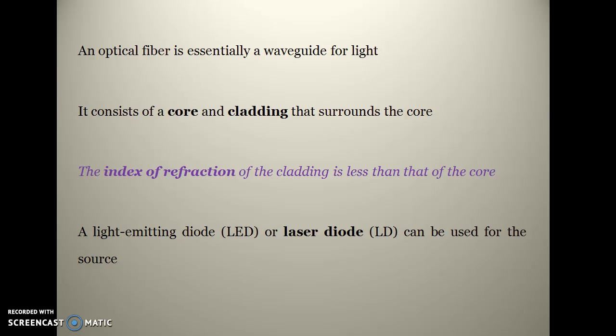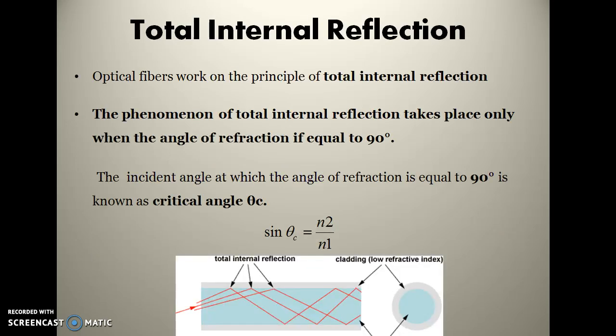For the propagation of light through the fiber optic cable, we need an input source such as a light emitting diode or a laser diode. The fiber optic cable works on the principle of total internal reflection.